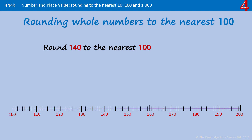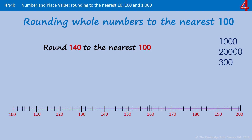Following on from rounding to the nearest multiple of 10, this video looks at rounding to the nearest multiple of 100 and it works in much the same way. Just remember that multiples of 100 need to have a 0 in the 1's place value column and the 10's place value column. Remember that multiples of 1000 are also multiples of 100, as long as there's a 0 in the 1's and in the 10's, then it's a multiple of 100.